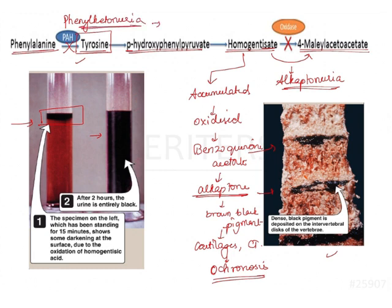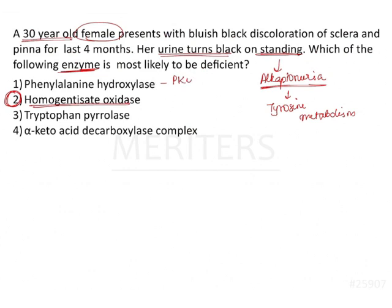If phenylalanine hydroxylase is deficient it results in phenylketonuria. The classical presentation of phenylketonuria is presence of a mousy odor in the urine — that is the typical finding. Therefore the first option speaks about phenylketonuria, not alkaptonuria. The third option is tryptophan pyrolase, an enzyme involved in tryptophan metabolism — specifically as tryptophan enters the kynurenine pathway involved in synthesis of niacin. The first enzyme in this pathway is tryptophan pyrolase.